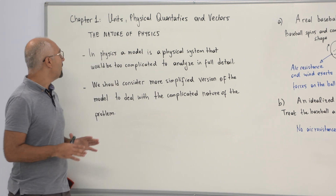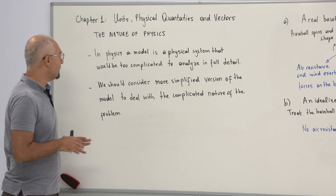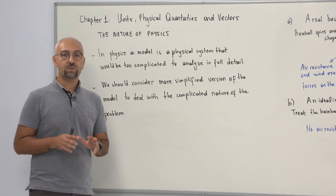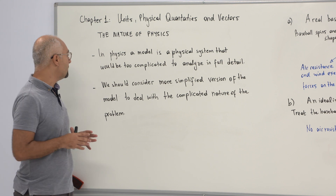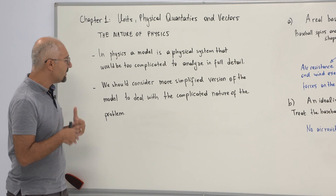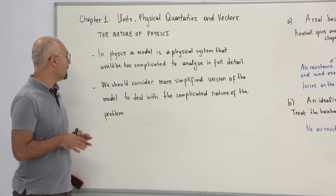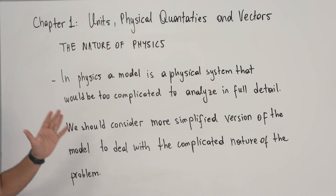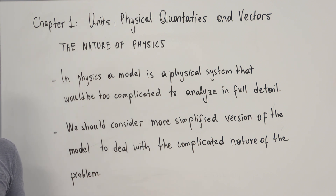Once we consider the nature of physics, we have to understand a couple of concepts in detail. For example, how we can treat the physics model of a physical system and how we can treat it as a simplified version. That is what we are going to discuss today. If you want to understand a physical system in full detail, that can be too complicated. In general, physicists consider a simplified version of the model.